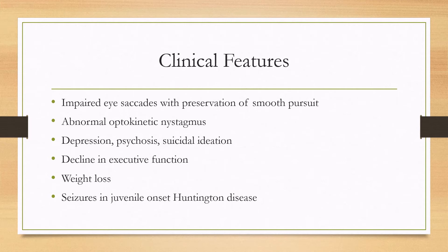There can also be impaired eye saccades with preservation of smooth pursuit, as well as abnormal optokinetic nystagmus. The disease carries a higher burden of depression, suicidal ideation, and psychosis. There tends to be a progressive decline in executive function. Weight loss and cachexia are fairly common, and the juvenile onset form can have a few different features, with seizures being one of them.